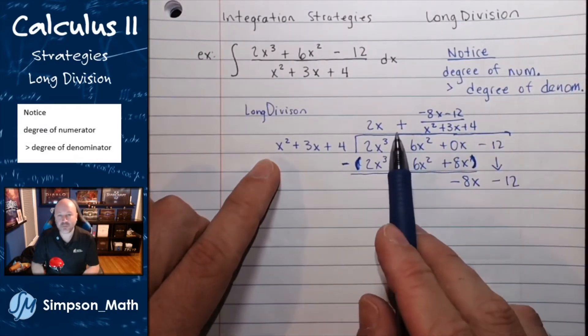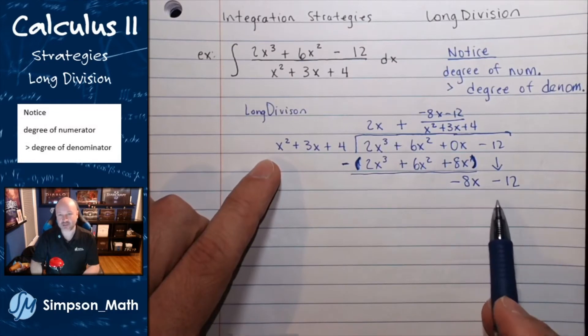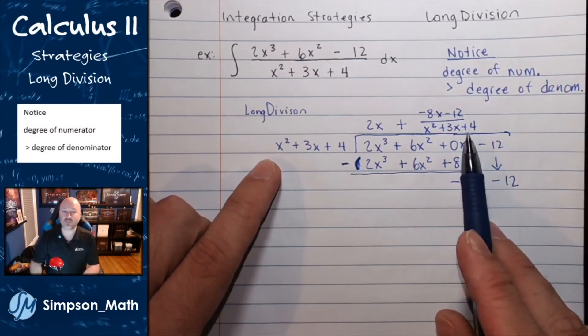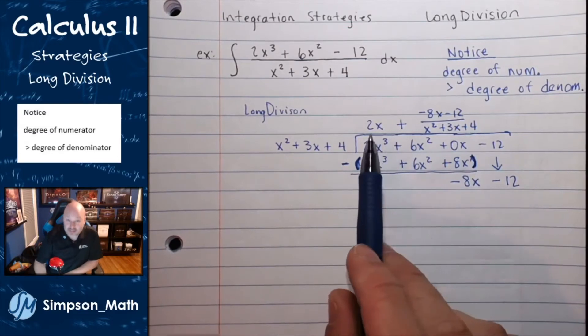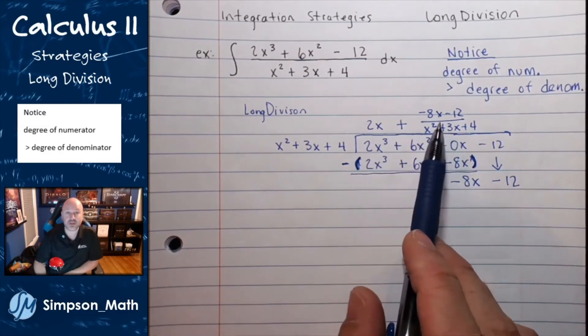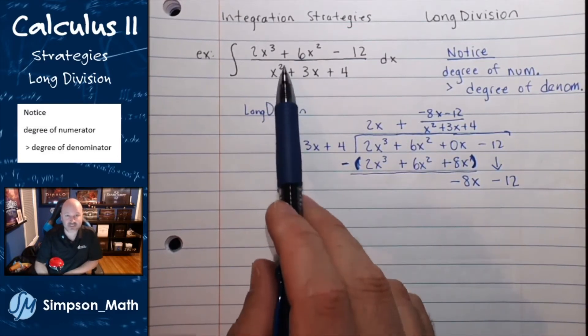Back over my divisor. So, 2x, plus the negative 8x minus 12, over x squared plus 3x plus 4.